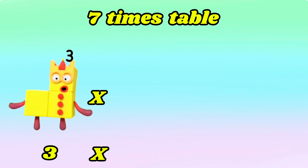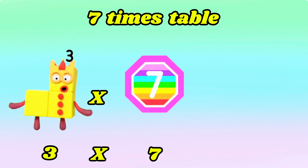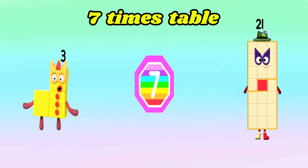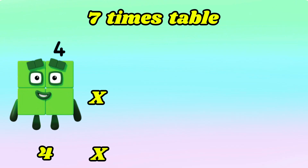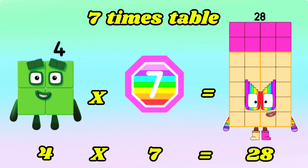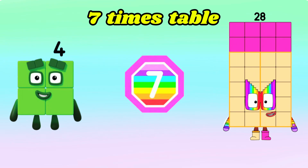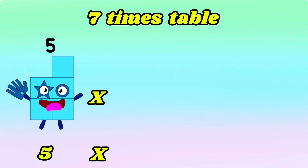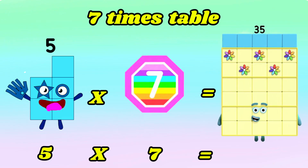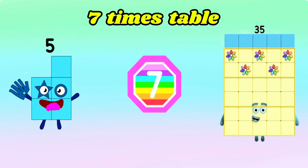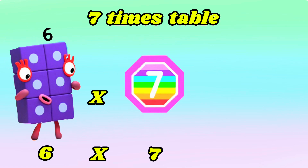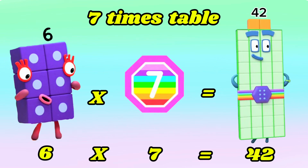3 times 7 is equals to 21. 4 times 7 is equals to 28. 5 times 7 is equals to 35. 6 times 7 is equals to 42.